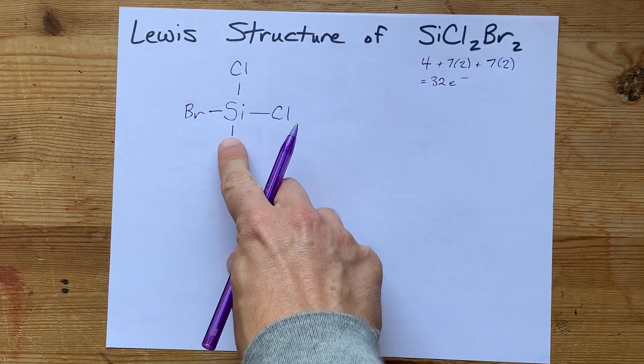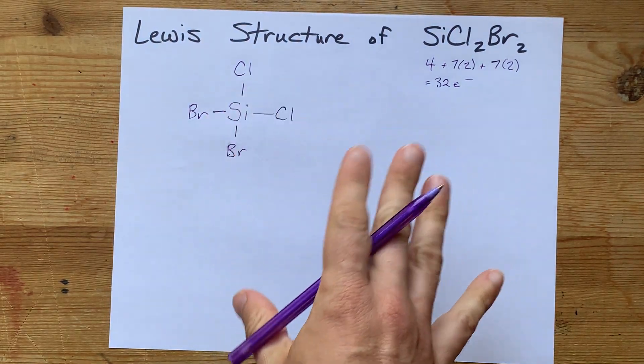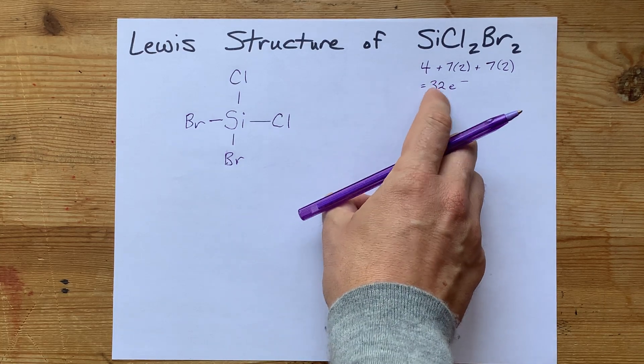Now that's 2, 4, 6, 8 electrons that I've written down so far, and I need 32.